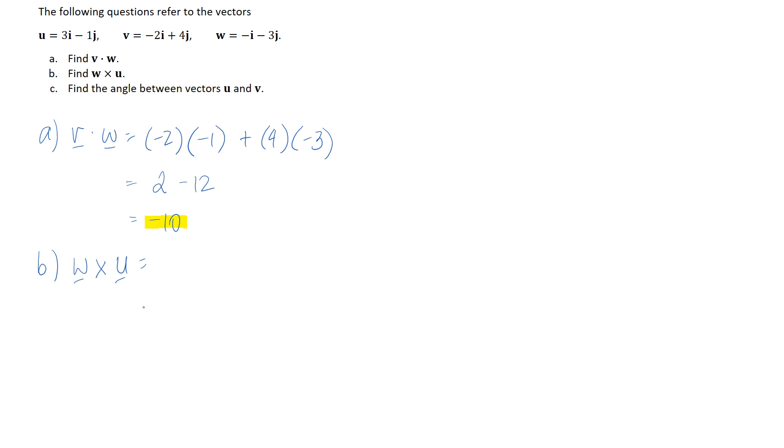So I'm going to substitute in our expressions for w and u so negative i minus three j needs to be crossed with three i minus one j. Alright so we need to expand this out each term needs to be multiplied by every other term in the other bracket.